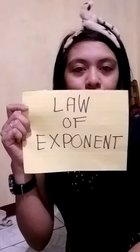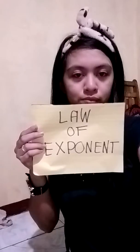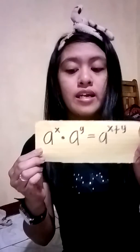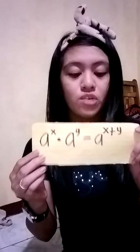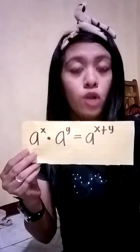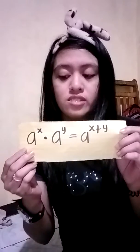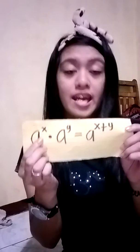Since our topic is all about exponential function and equation, from the word exponents, let us recall how to solve the law of exponents. So let's start. If the given example looks like this, it's in the form of a raised to the power of x times a raised to the power of y, is equal to a raised to the power of x plus y. All we have to do is add each exponent, which are x and y.